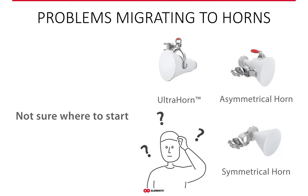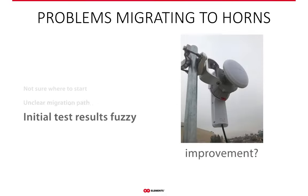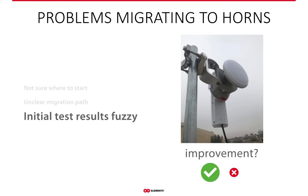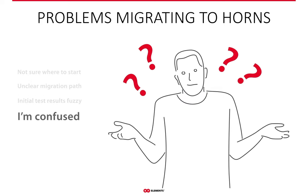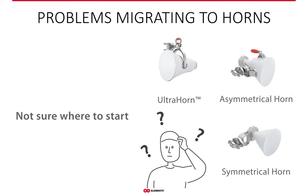What are the most typical problems when migrating to horns? Perhaps you're sick and tired of interference issues and ready to give horns a chance. There can be several issues: there's basically no general instruction on where to start, or the execution path is not clearly defined. Perhaps your initial tests don't give a good picture of what you're expecting, or you might be confused by horn technology to begin with — and all of this is absolutely fine.